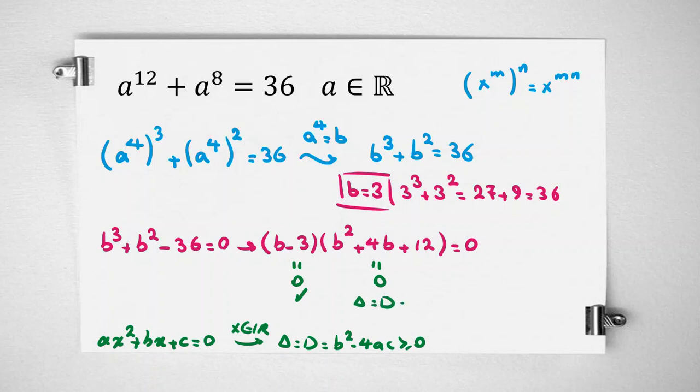Delta or discriminant in this case is 4 squared minus 4 times 1 times 12, which is 16 minus 48, which is less than zero. So here we don't have any real solution, so our only answer is b=3.